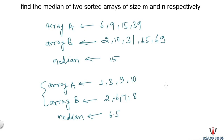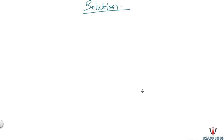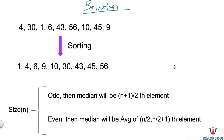As we have to find a median, it is very important to understand what a median is and what the key properties are. First, we need to sort the sequence. After sorting, if the sequence size is odd, the median will be the element placed at the (n+1)/2 position. In our example, the size is 9, so the fifth element — which is 10 — would be the median.